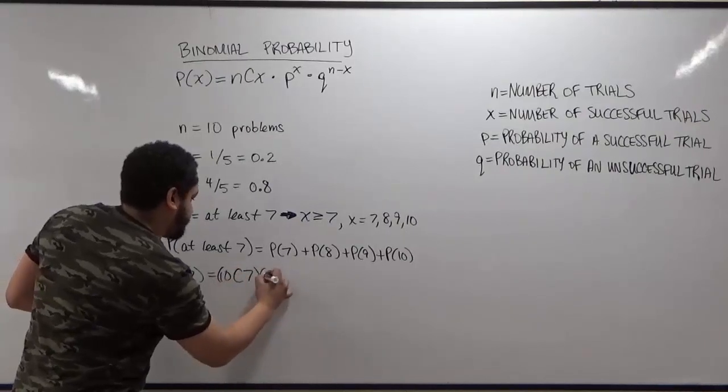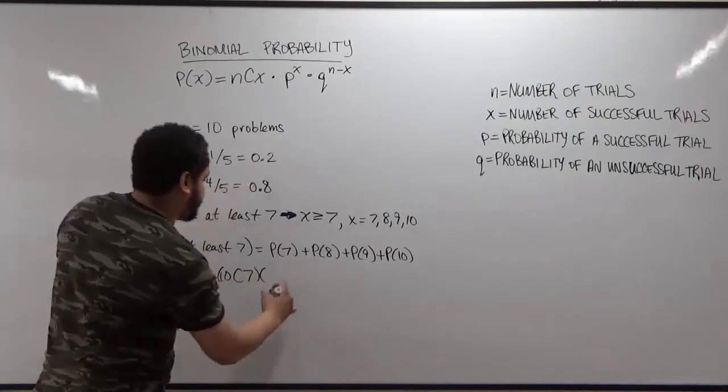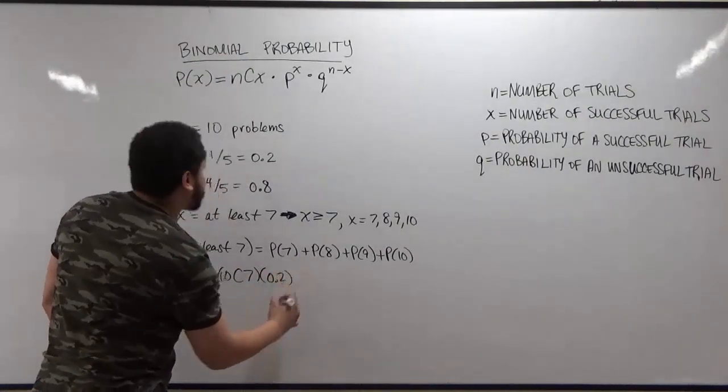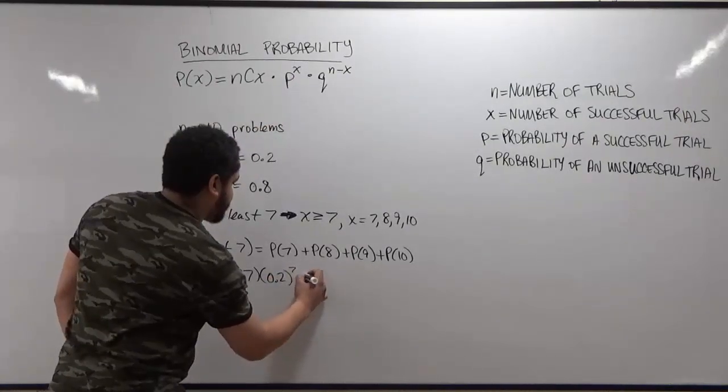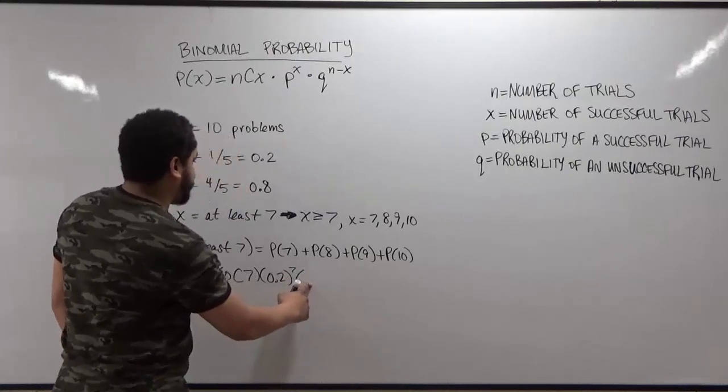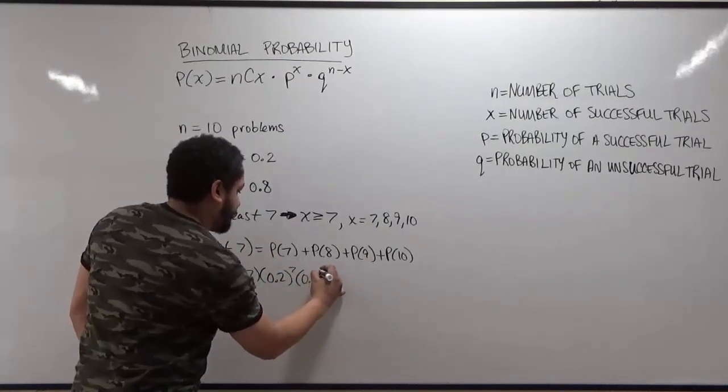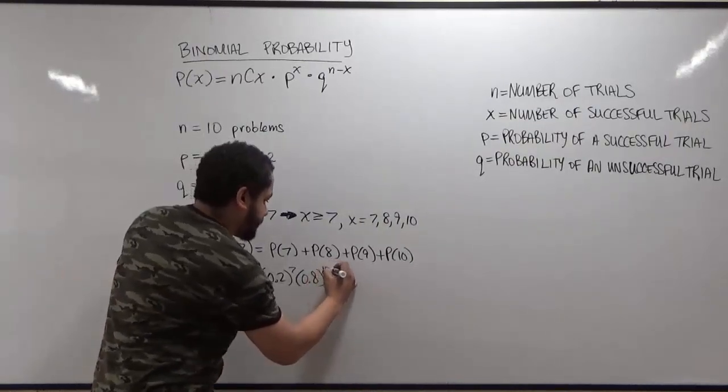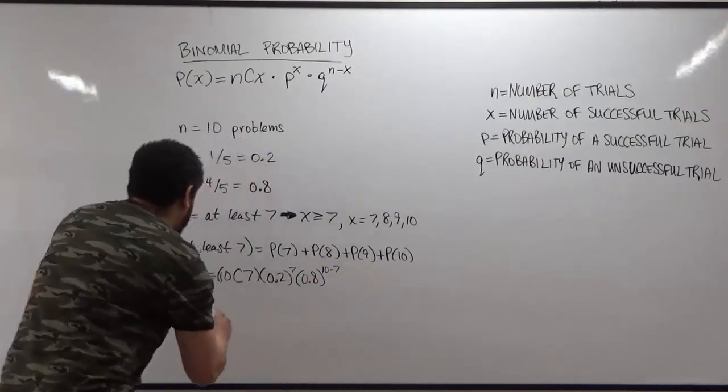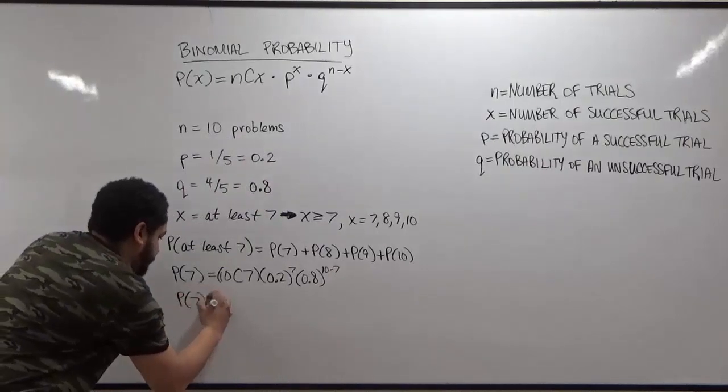And we're going to multiply this by the probability of success of 0.2, raised to the power of x, which is again 7. And we're going to multiply this by the probability of failure, which is 0.8, and raise this to the power of 10 take away 7. So 10 take away 7 becomes 3. So this then becomes the P(7) equals,